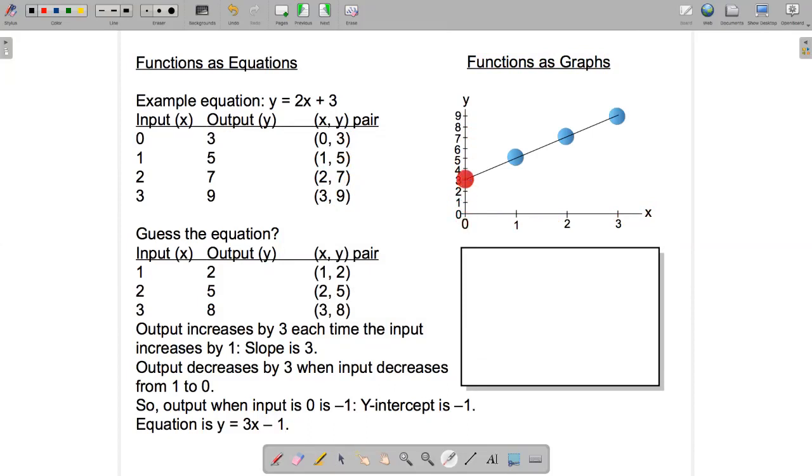When x is 0, y is 3. That's this point. When x is 1, y is 5. That's this point. x equals 2, y is 7. x equals 3, y is 9. And all those points lie along a straight line. And the equation of that line is y equals 2x plus 3.